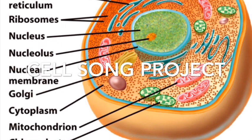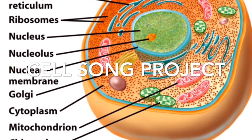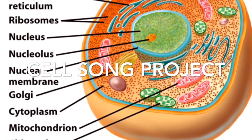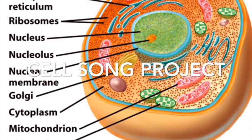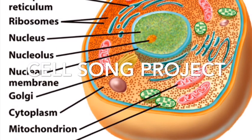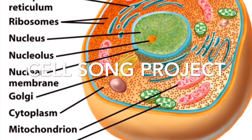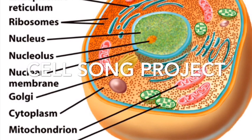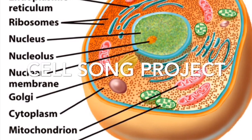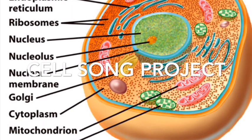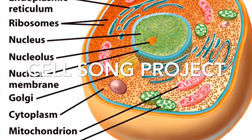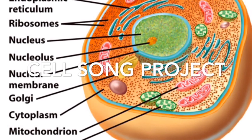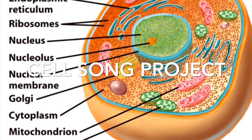The nucleus works as the cellular control center. The outside of the nucleus is the nuclear envelope — it contains two membranes and thousands of nuclear pores. Nuclear pores enable materials to go in and out of the nucleus.